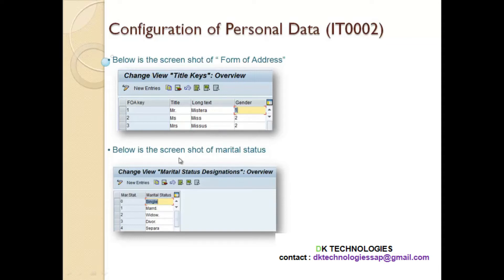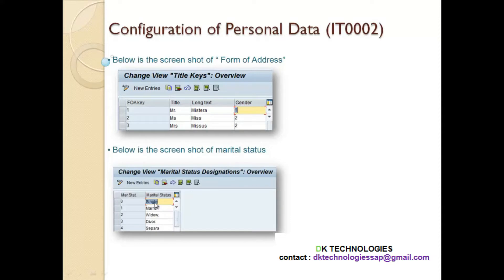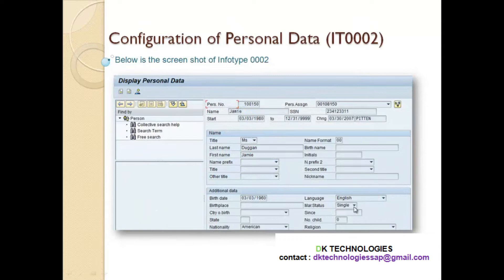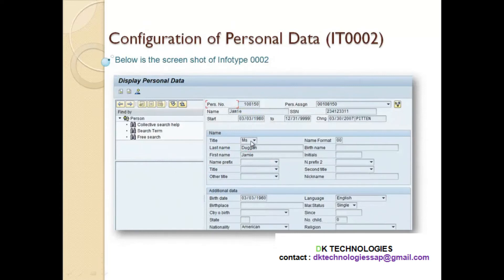These values are shown in info type 2. There is a field called marital status — where is the value 'single' coming from? It comes from the back end where you maintain this value. All five configured field values will show up when you click the drop-down icon. Similarly for the title field, it shows Miss but lists all three options to select from. This is the relationship between back-end configuration and what appears on the front end.